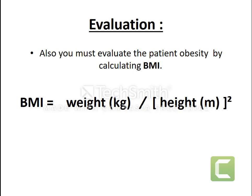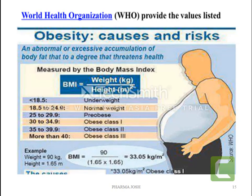Another evaluation parameter is BMI — Body Mass Index — which is equal to weight in kg divided by height in meters squared. This is given by WHO. BMI less than 18.5 indicates underweight. BMI 18.5 to 24.9 indicates normal weight. BMI 25 to 29.9 is pre-obese. BMI 30 to 34.9 is Class 1 obesity — the initial step. BMI 35 to 39.9 is Class 2 obesity. BMI more than 40 is severe and very complex obesity.